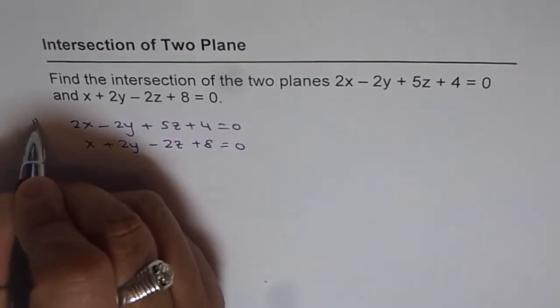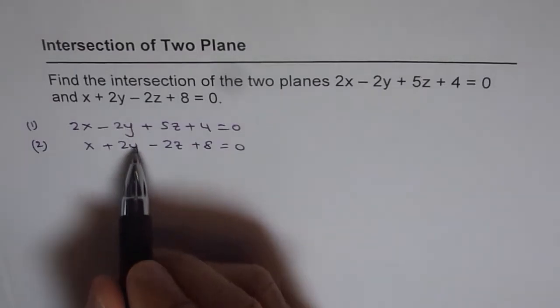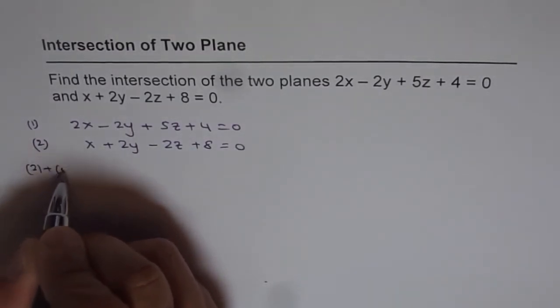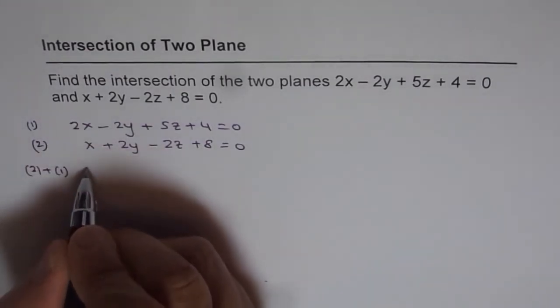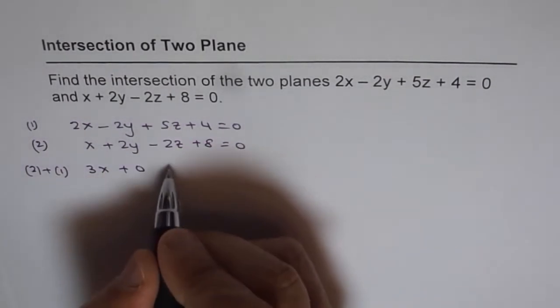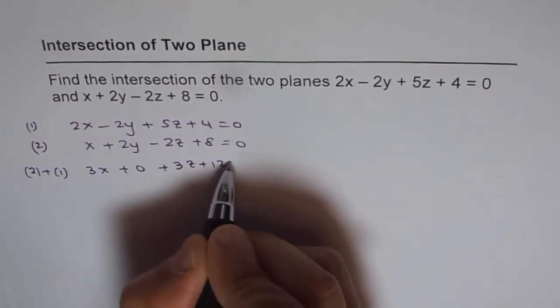Let's number them as 1 and 2. If we add equations 1 and 2, we can eliminate y. By adding equation 2 plus 1, we get 3x + 0 + 3z + 12 = 0.